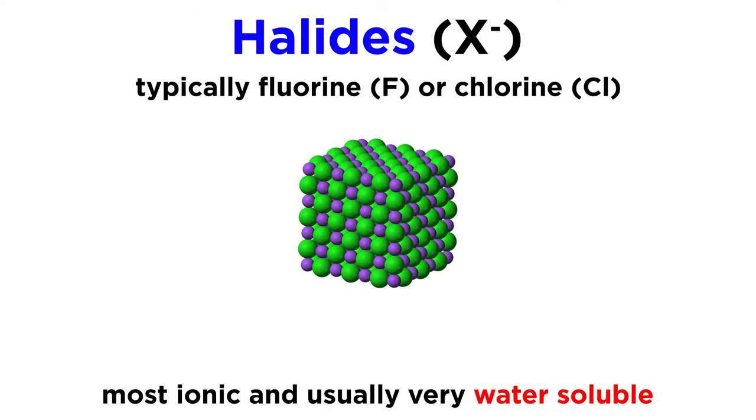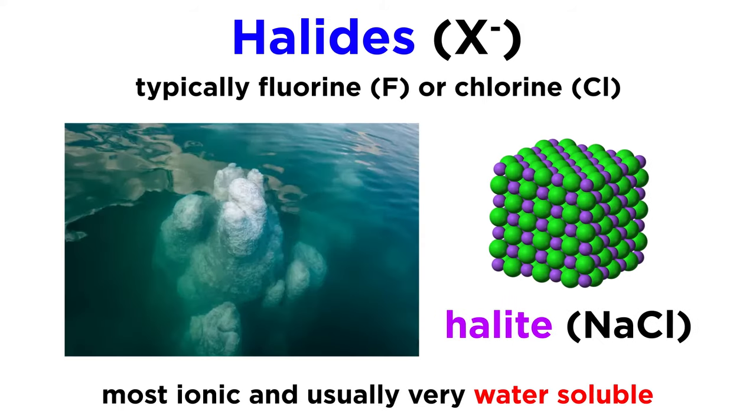Another simple class of minerals with ionic bonding is the halides, which are composed of a cation bonded to a halogen, typically fluorine or chlorine. The halides are the most ionic of the minerals and are usually very soluble in water. Halite, or sodium chloride, is a common halide mineral, and it often precipitates during the evaporation of seawater.